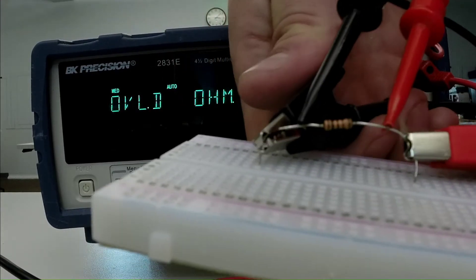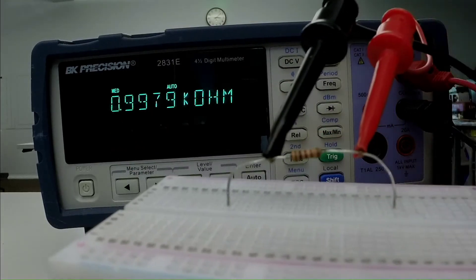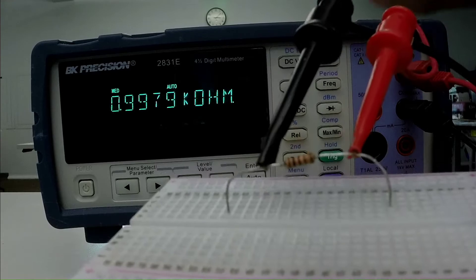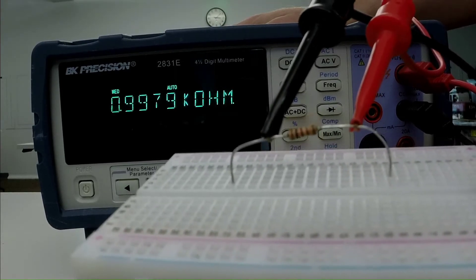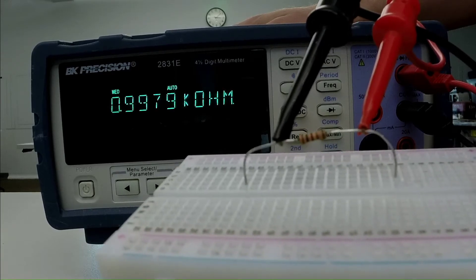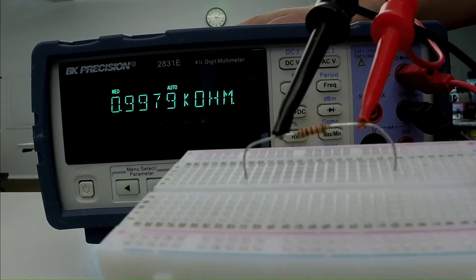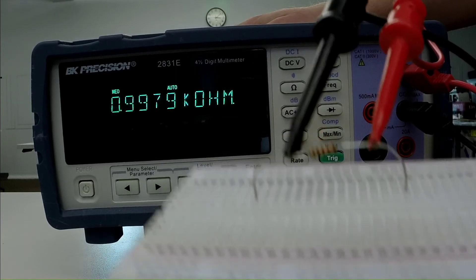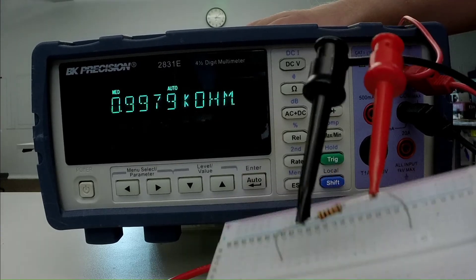So if I just disconnect my power from this, totally disconnect it, you notice now I'm reading about one kilo ohm, which is what this resistor value is. So that's a good thing to keep in mind if we want to measure our resistances is just make sure that we have that component by itself, not part of any other larger circuit, or we're going to get some weird resistance measurements.